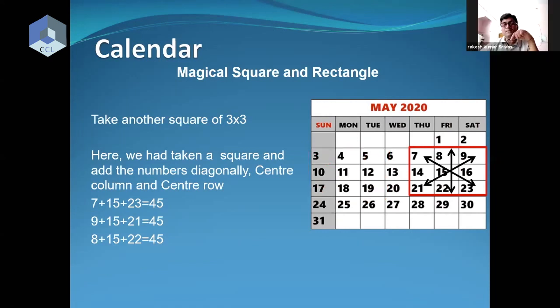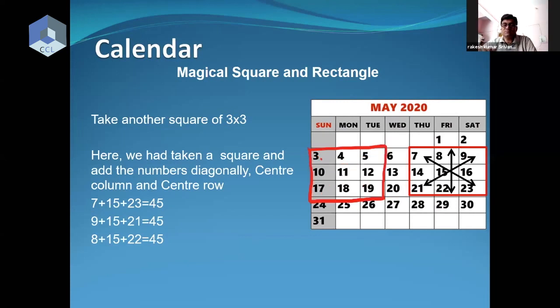Let's say we take this matrix. Assuming this is the center number — the number above, however much above it is: the difference between 3 and 11, and between 11 and 19 is the same. We'll demonstrate it in two ways.